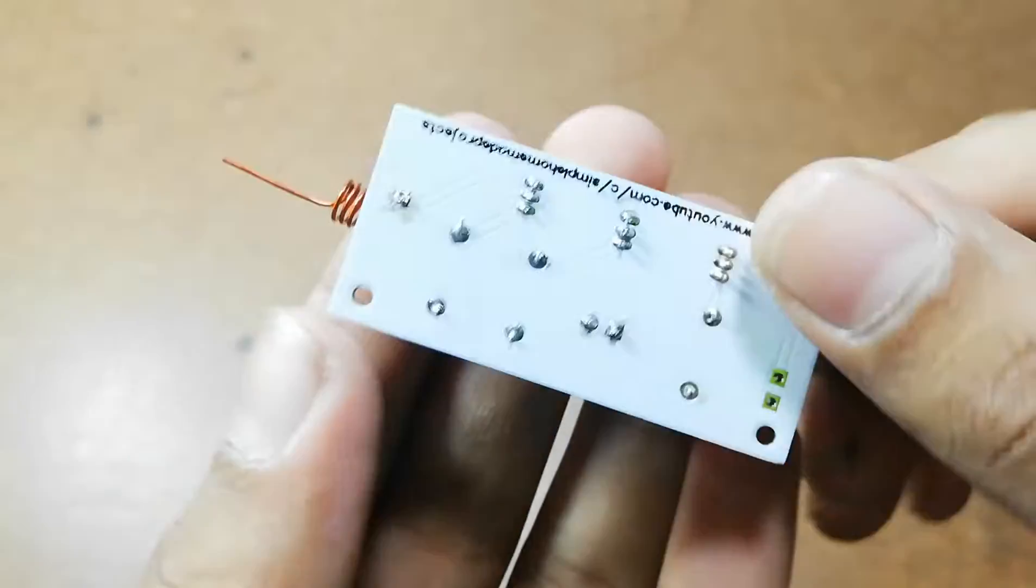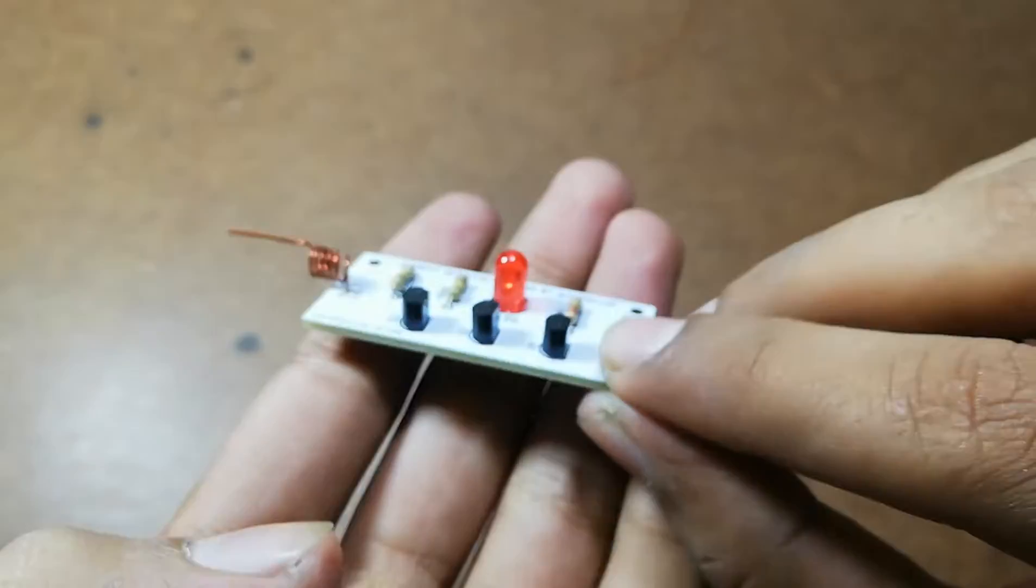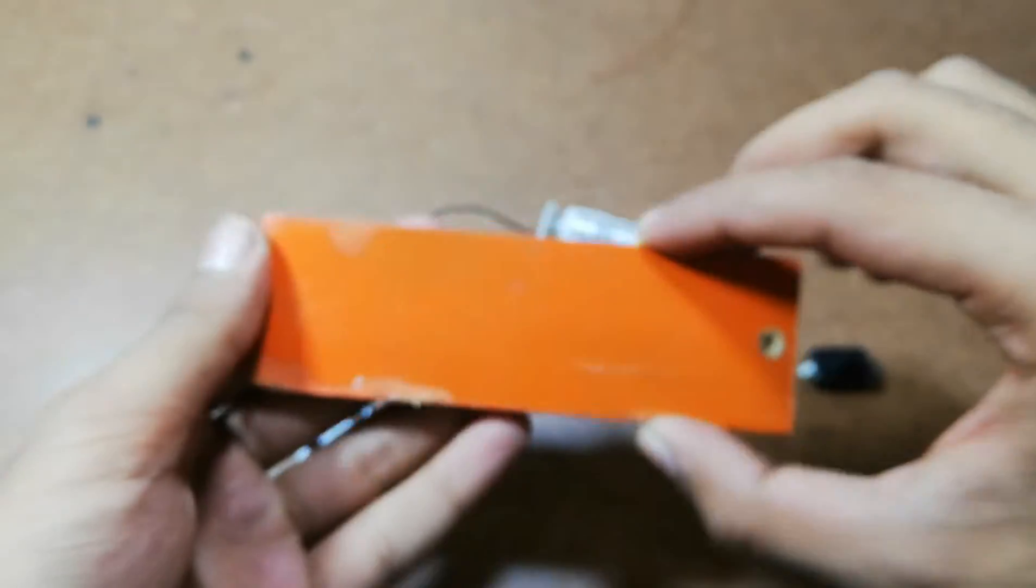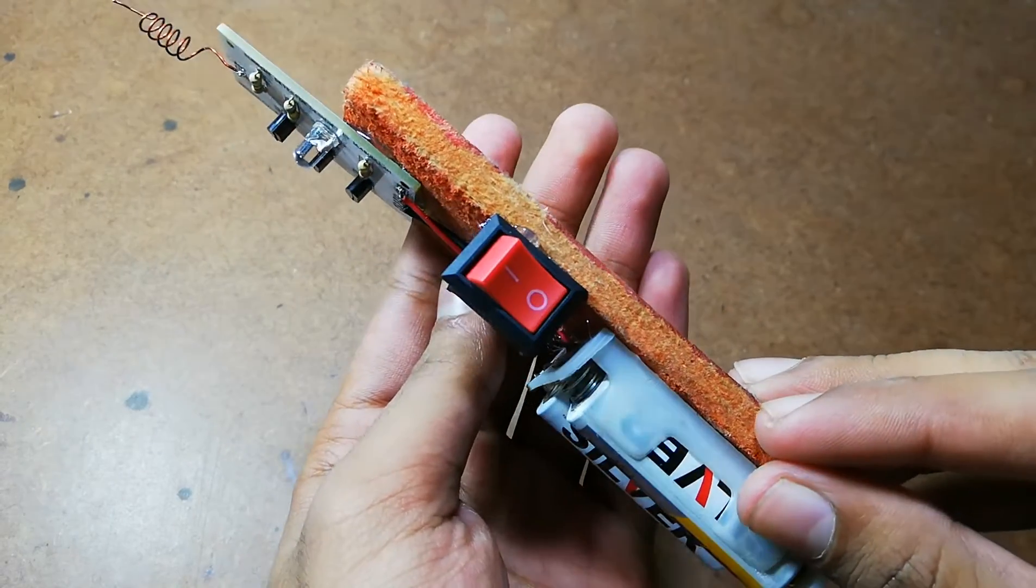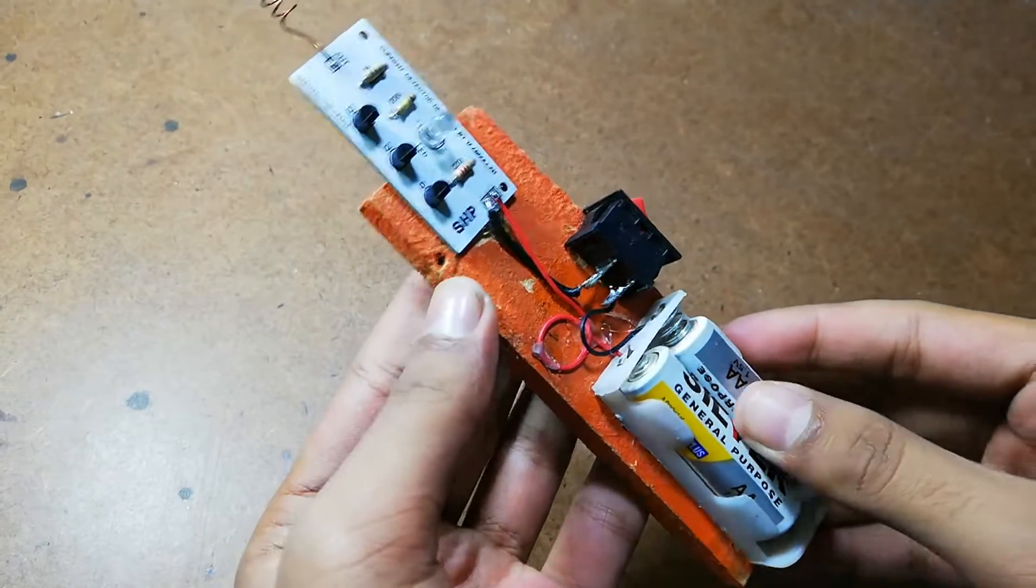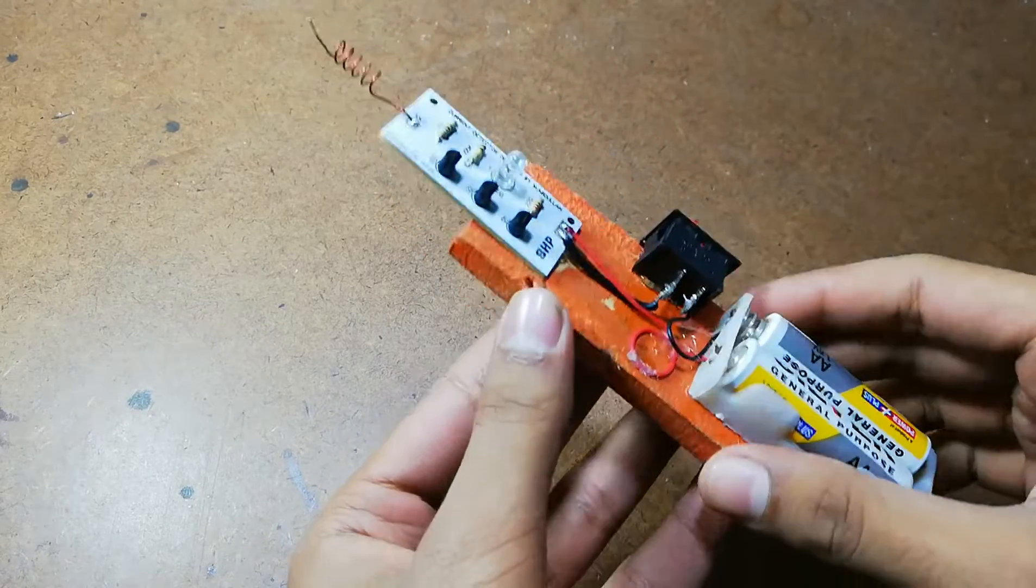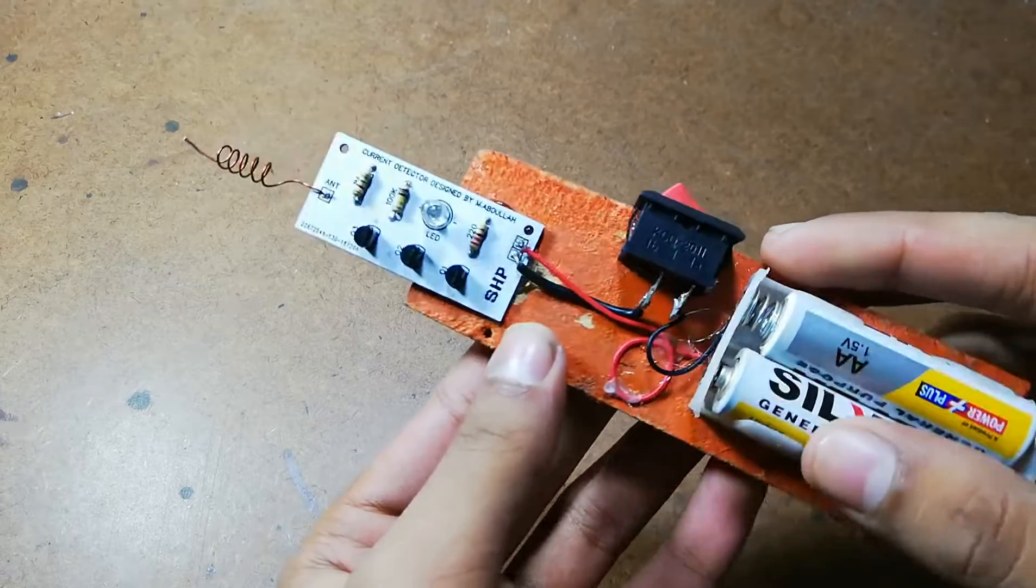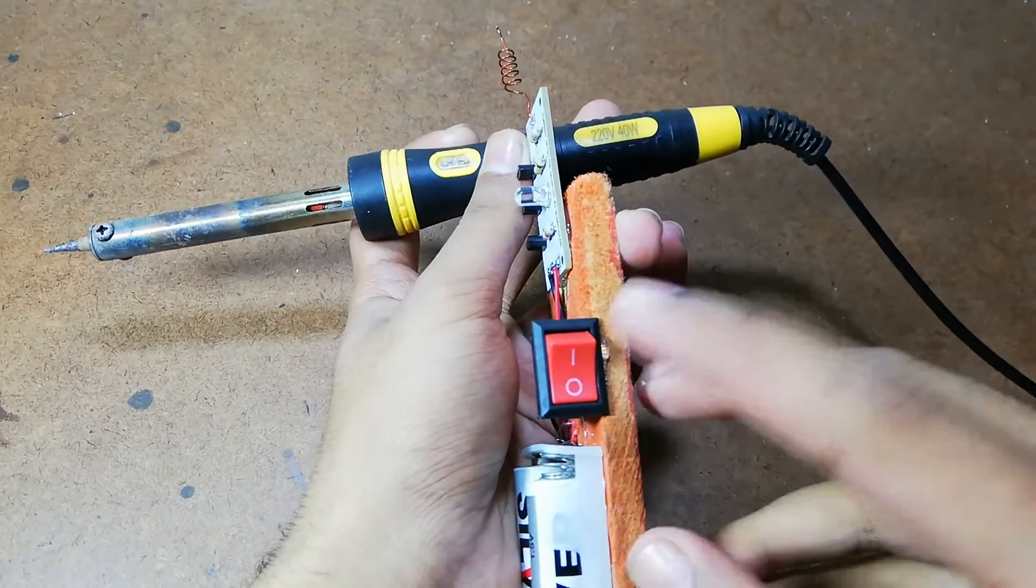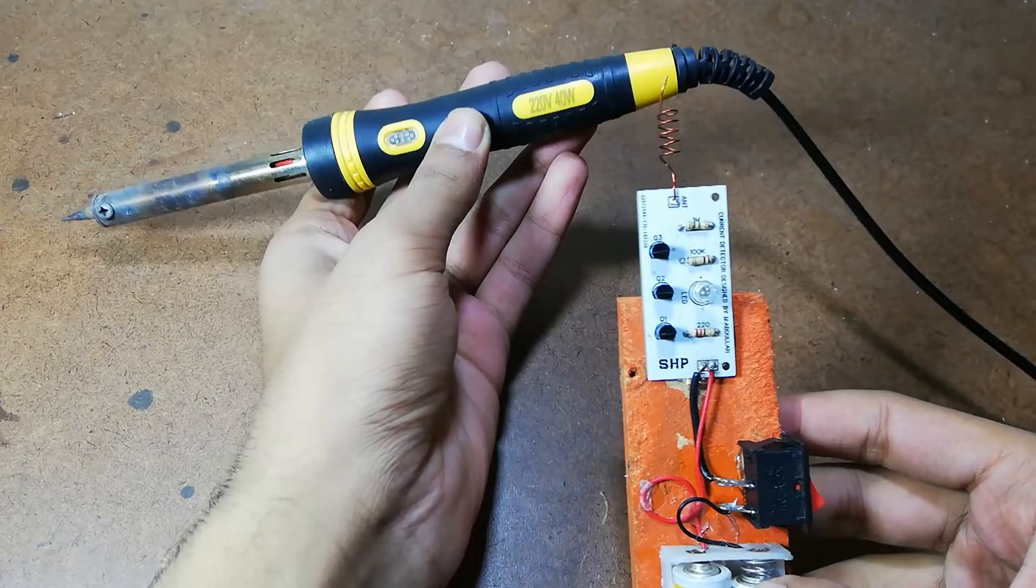And here friends our soldering process has been completed and now I am going to assemble all of the components on this piece of MDF sheet. Here I have arranged all the components and I have also changed the switch as there was a problem in the previous one. So now I am going to check this circuit.